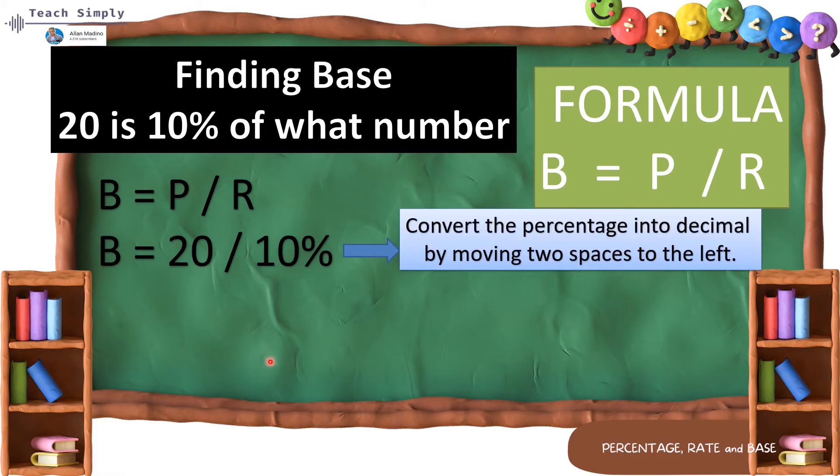So, base is equals to 20 divided by 10%. So, we have to convert the percentage into decimal by moving two spaces to the left. So, 1, 2, from 10%, magiging 0.10. So, 20 divided by 0.10 is equals to 200. Therefore, 20 is 10% of 200.